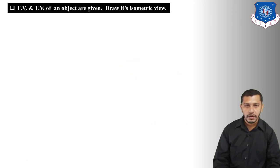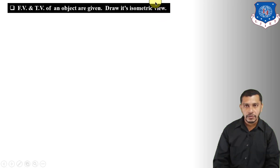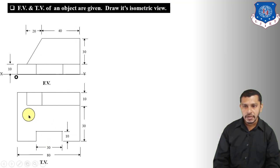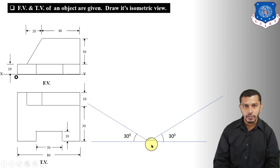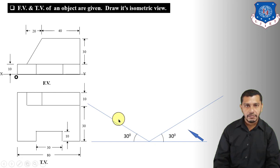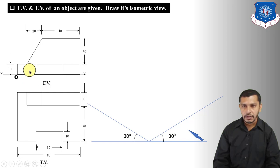Now let's draw the isometric view of another object, in which the front view and top view are given. We will use actual dimensions since we are drawing the isometric view. This is the front view and this is the top view of the object. Start with the isometric axis — draw a baseline and from the baseline draw lines inclined at 30 degrees on both sides. We will observe the front view from this direction, so one axis marks the length and the other marks the width.